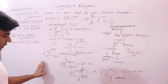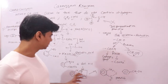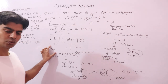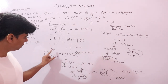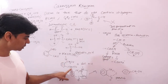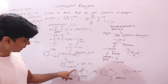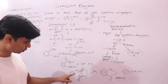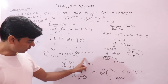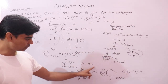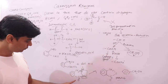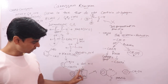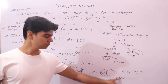These two are examples of intramolecular Cannizzaro reaction, where one CHO group is reduced to alcohol and the other is oxidized to COOH, which reacts with NaOH to form its sodium salt. On hydrolysis with dilute HCl, it forms COOH, which can undergo dehydration to form phthalide.